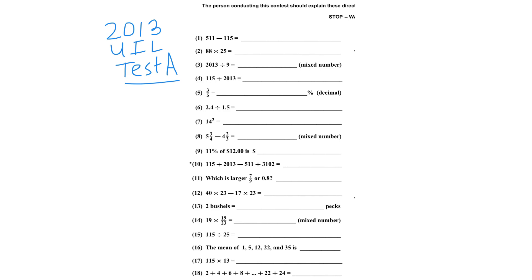Number 1 is 511 minus 115. If I look at 11 minus 15, I'm looking at negative 4. So I can't write a negative 4, so I'm going to write 96 and borrow 100. So 500 becomes 400. 400 minus 1 — 4 minus 1 is 3. So that's 396.